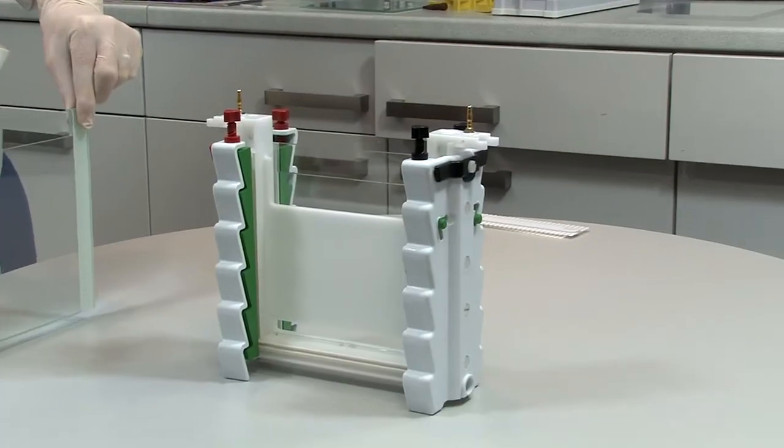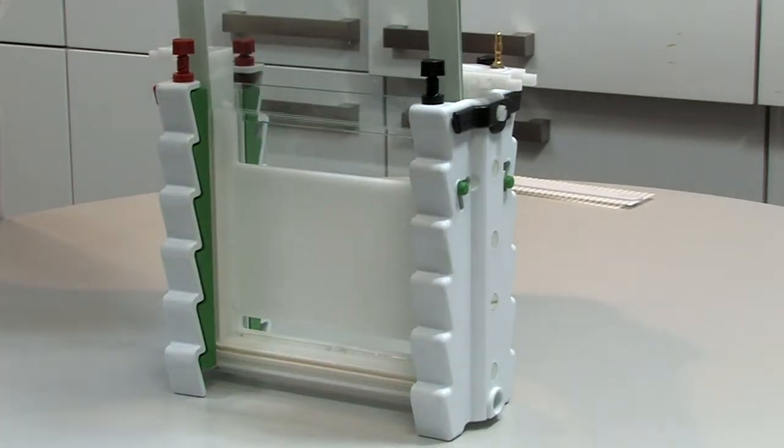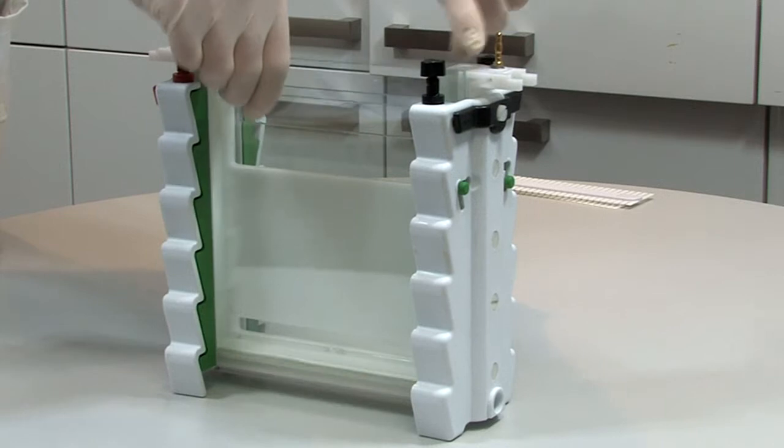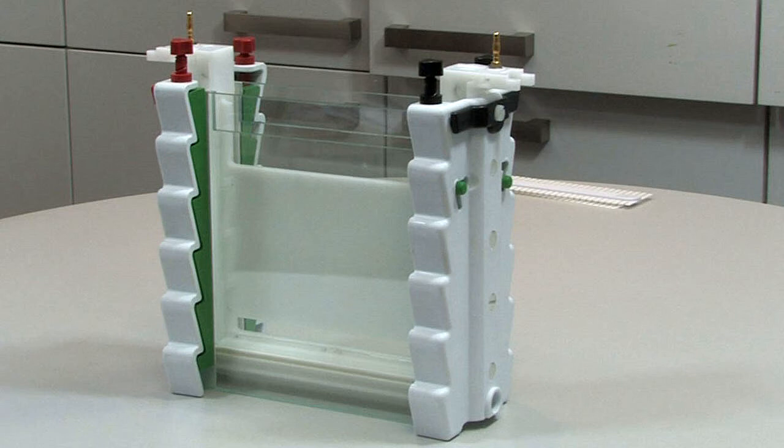With the green clamps now out of the way, carefully slide the glass plate sandwich into the upstand, lowering the glass plates until they are flush with the bottom of the side cheeks on the lab bench surface, not on the casting base.